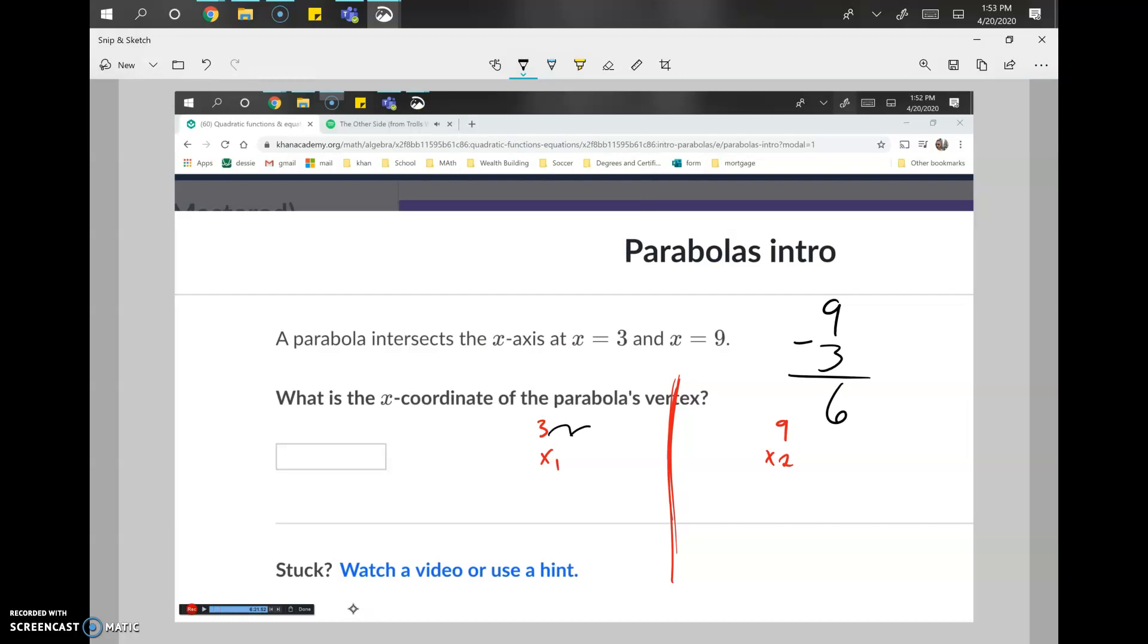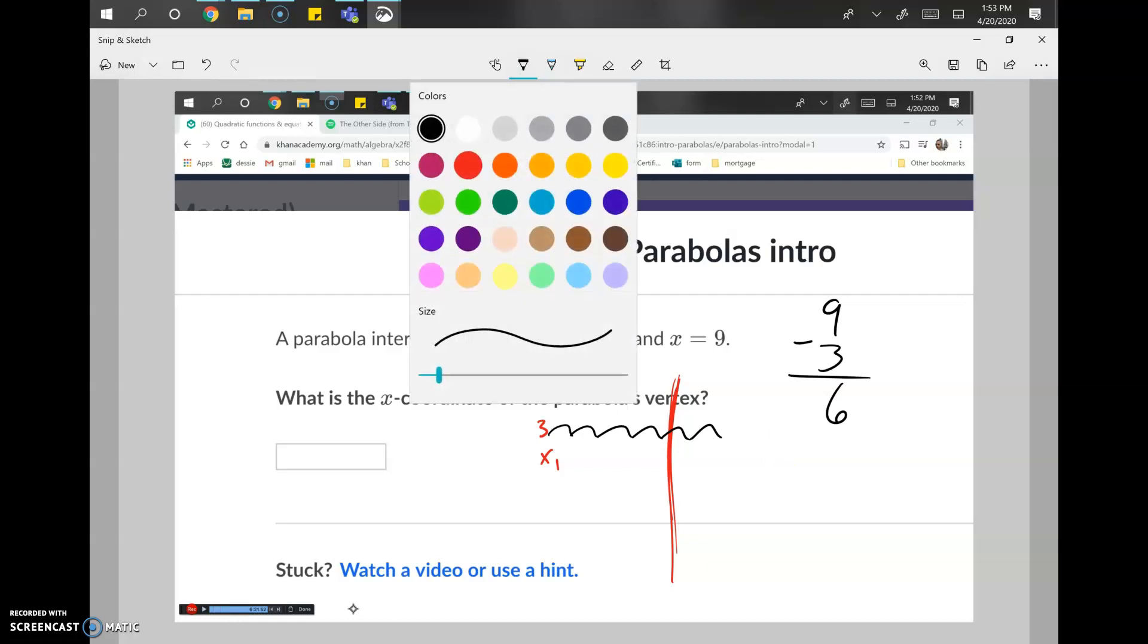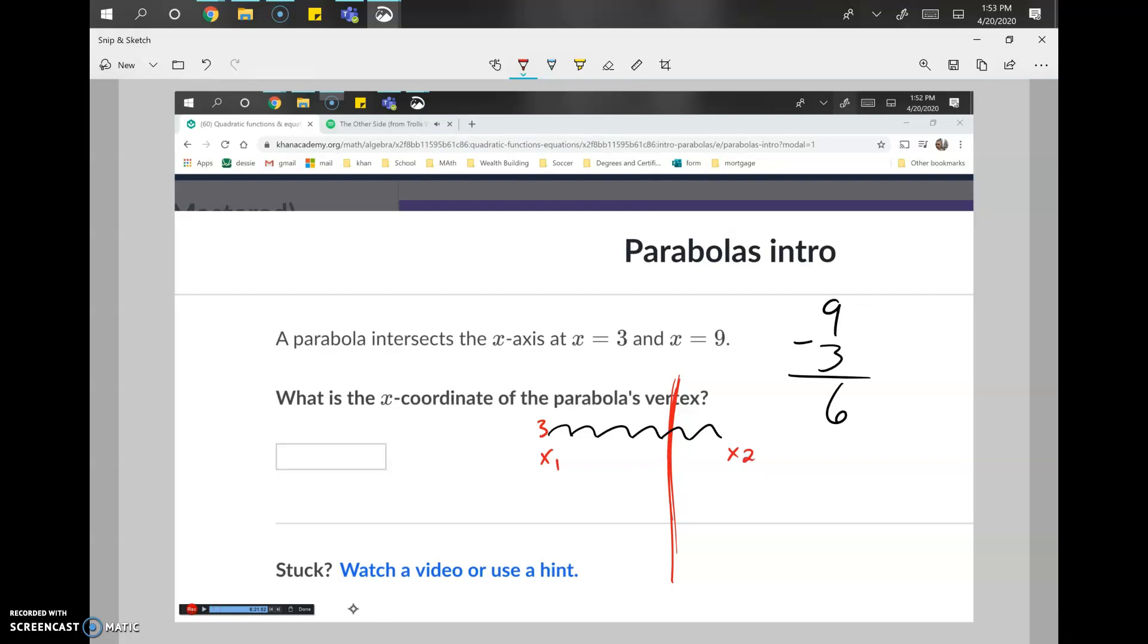So there's six units: 1, 2, 3, 4, 5, 6. There's six units between these x-intercepts, and halfway, or half of six, will be three. So we just got to count three units: 1, that would be 4, 2, that would be 5, 3, that would be 6. So 6 is the halfway point for our vertex. The x-coordinate would be 6. Let's go ahead and type it in.